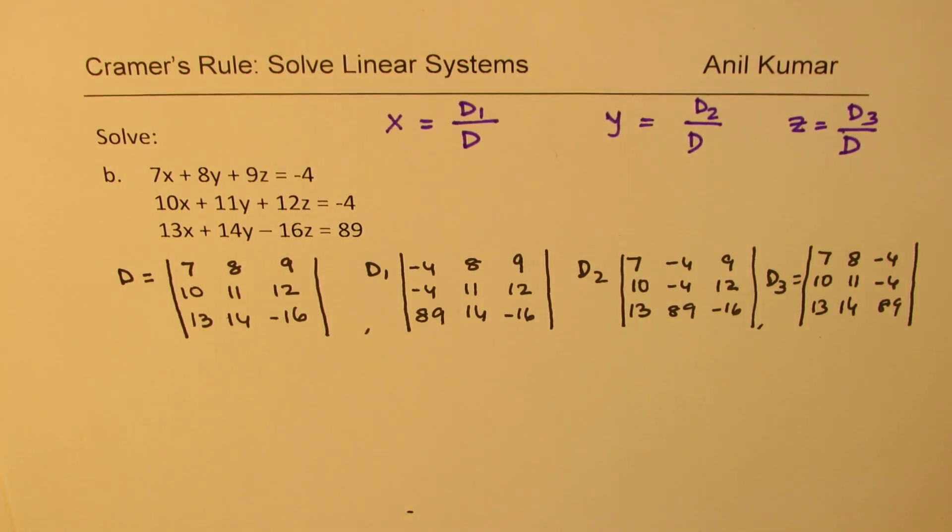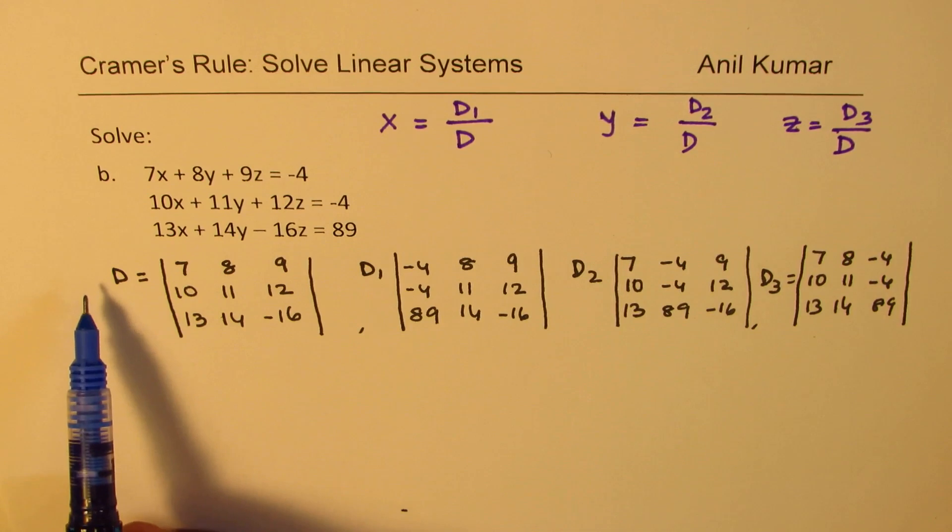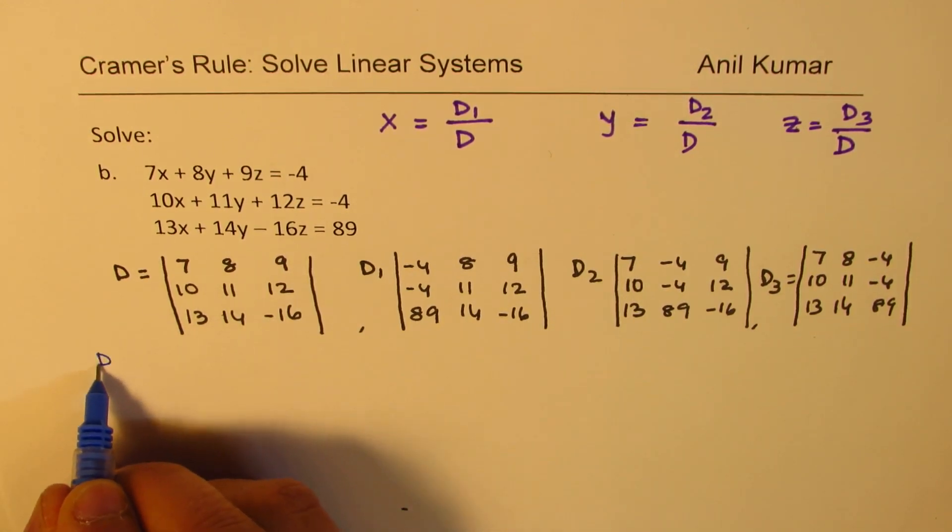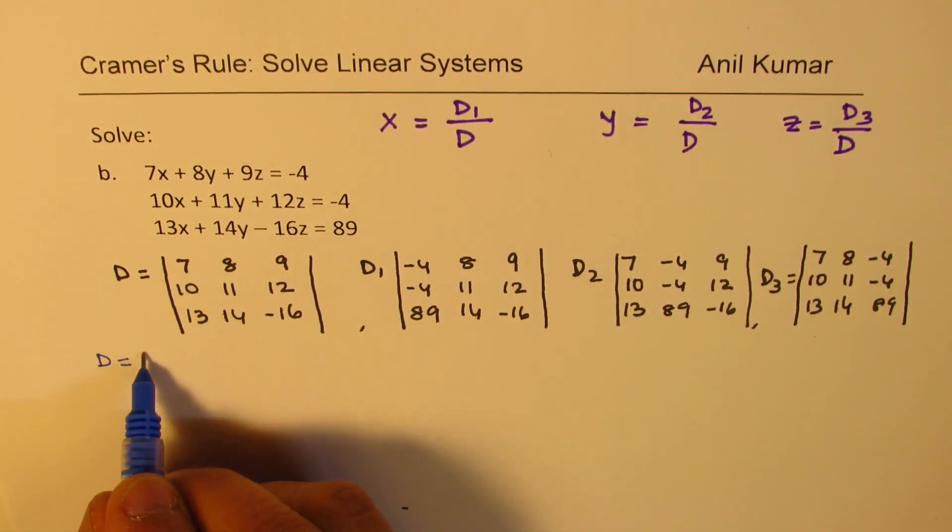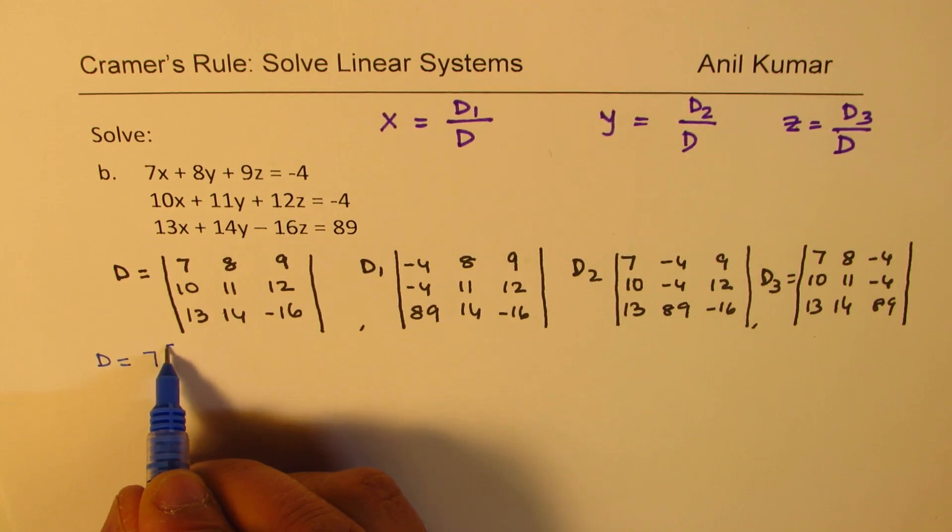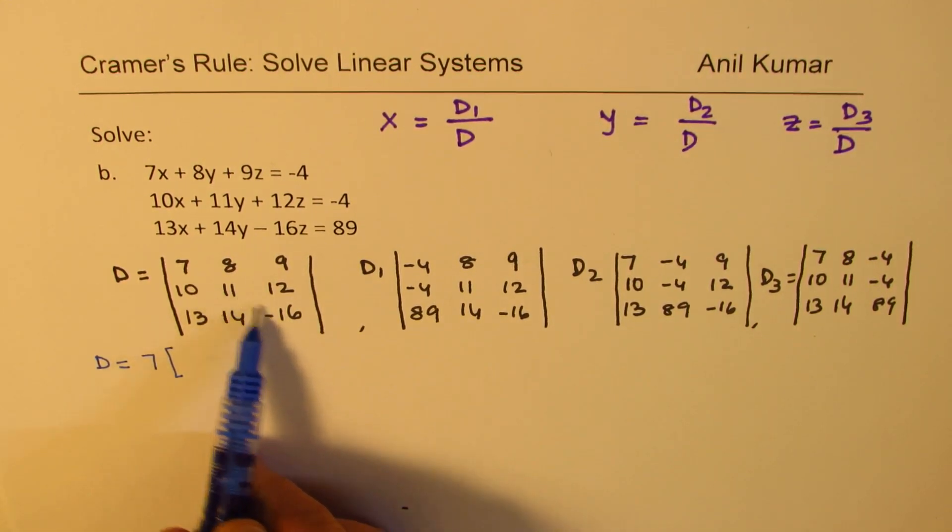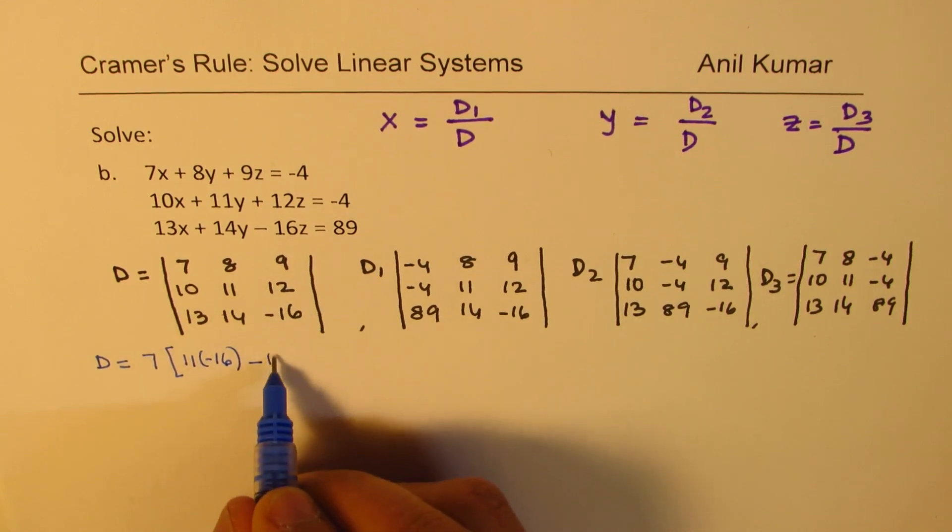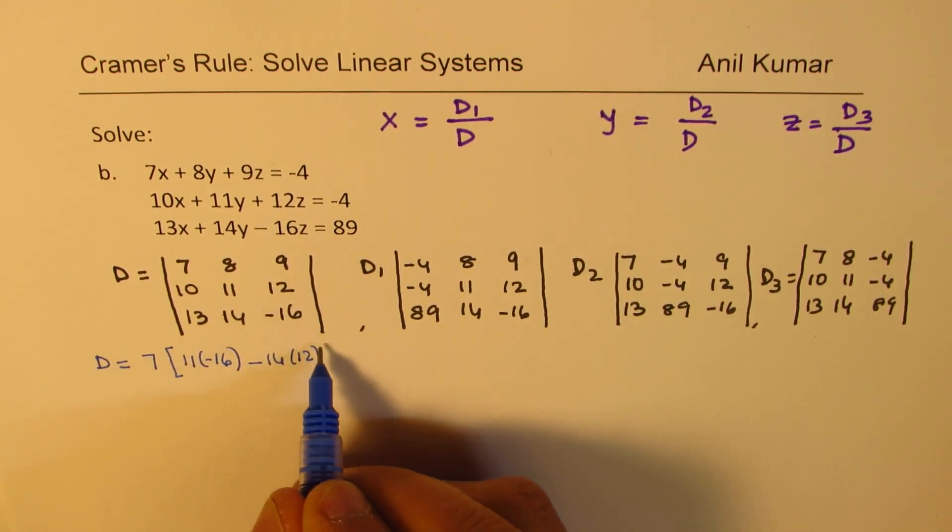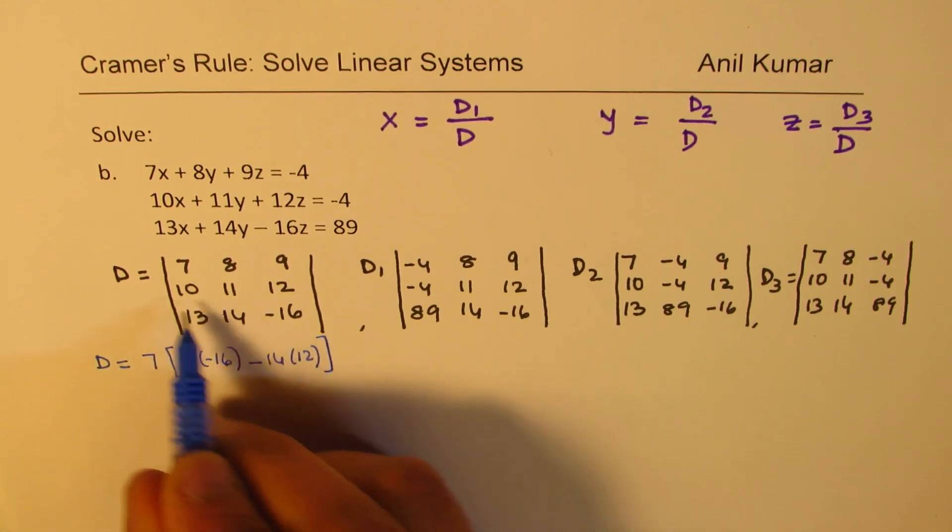Now, what we need to do is pick up a calculator and then find the values of each determinant and substitute and get the answer. So, let me get hold of a calculator now. So, let me also explain how to find the value. Let's say, let's begin with D. What we do is we select a row and a column. So, we'll start with number 7, which is right there in the corner. And within brackets, we'll find this coefficient. So, 11 times -16, 11 times -16 minus 14 times 12. That is how we work with determinants. So, we get the value.